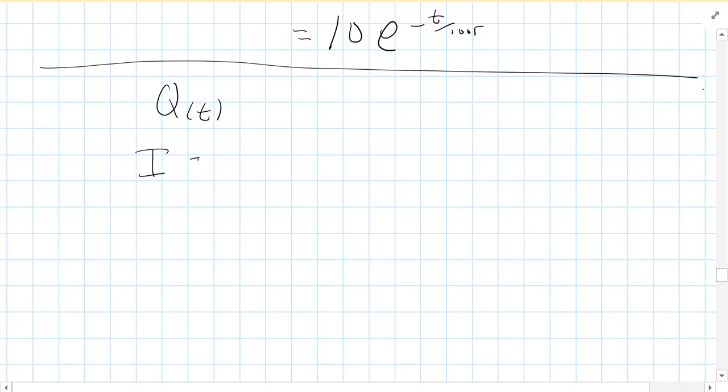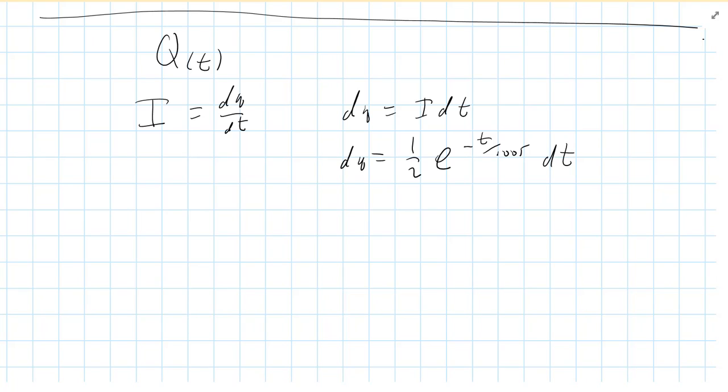And what we're going to do is we're going to calculate the amount of charge versus time and then the total charge that flows to the inductor before current shuts off. So how are we going to do that? So we're going to find Q as a function of time first. Well, we know that I is equal to DQ DT. So DQ equals I DT.